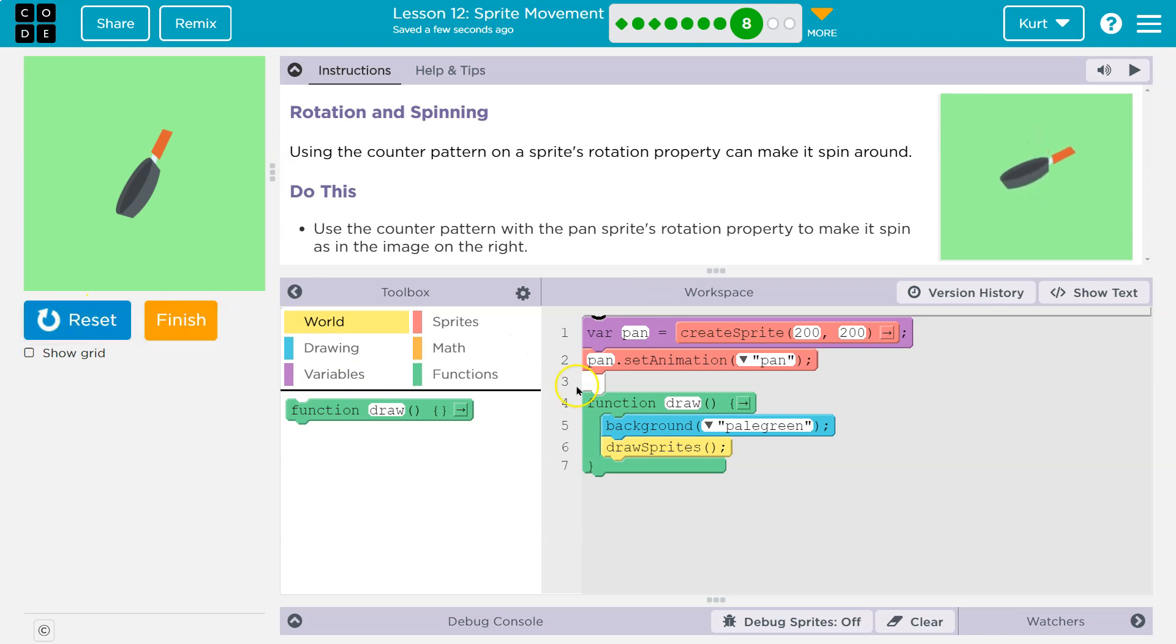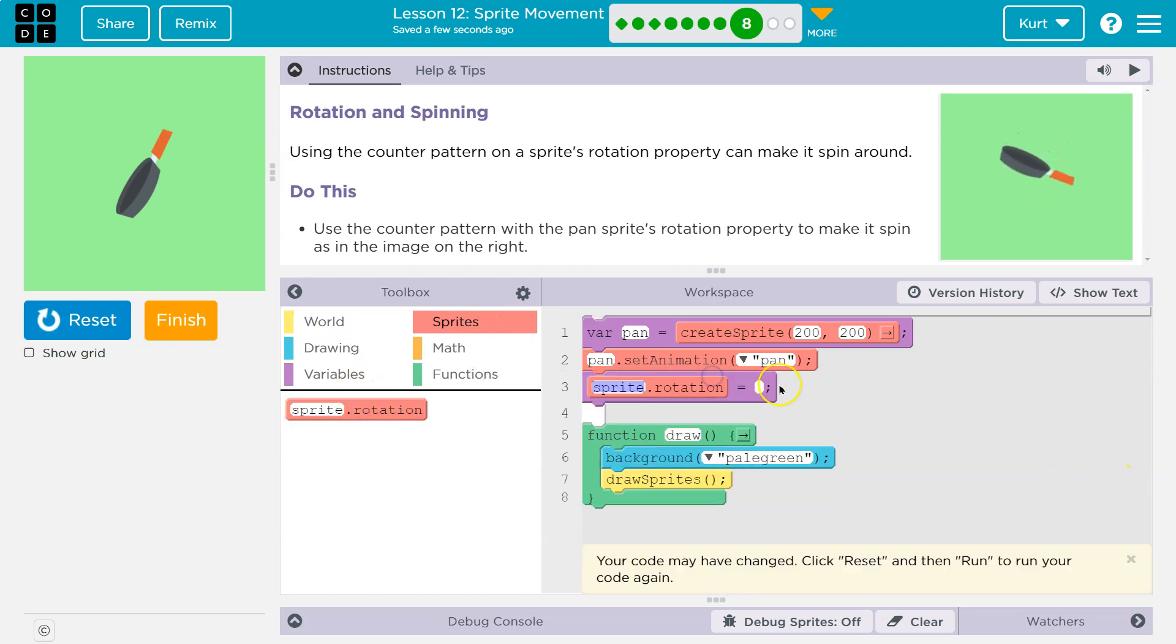What do we want to do? We want the pan to spin. Now, if I just grab sprite.rotation and drop it here, maybe this isn't going to work. Right, so we don't have a sprite. We have a pan. So hey, computer, make the pan rotate 90 degrees.